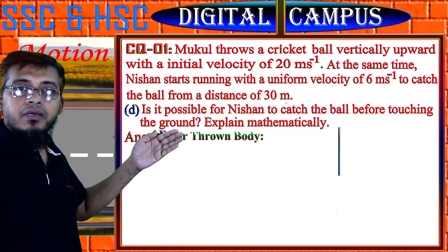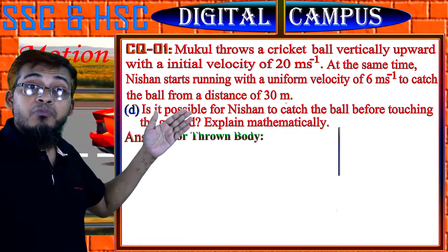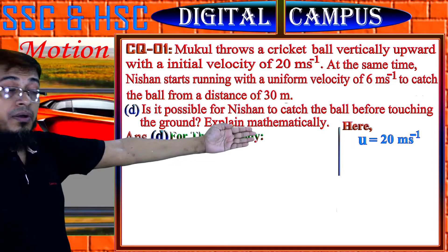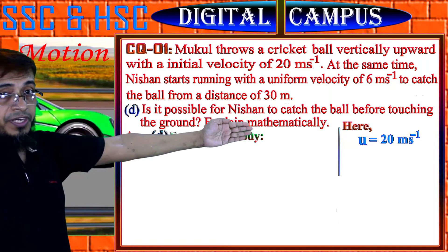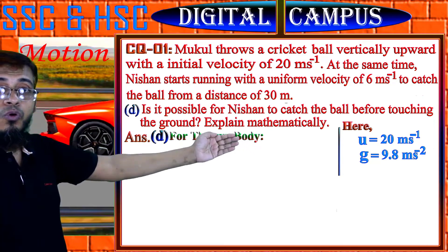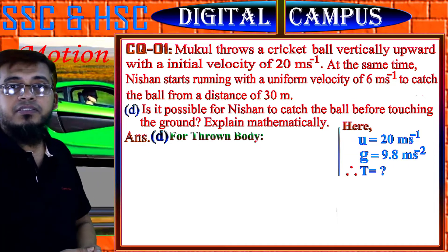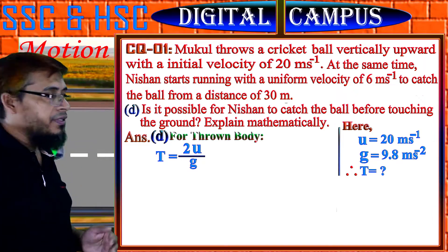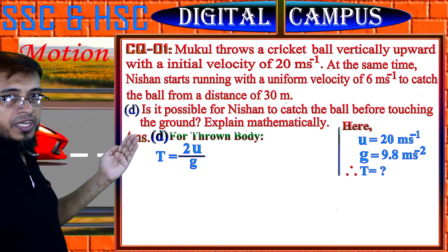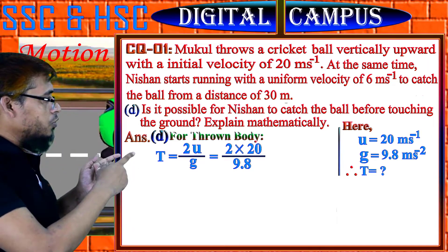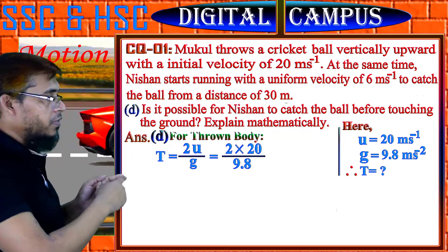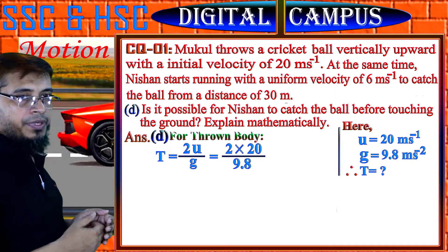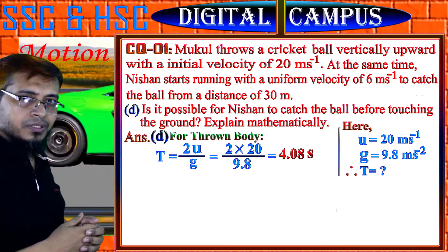First, we will measure the time of flight of the ball. Given initial velocity U = 20 m/s and g = 9.8 m/s². We have the formula for time of flight: T = 2U/g. Putting the values: T = 2 × 20 / 9.8. This gives approximately 4.08 or 4.1 seconds.